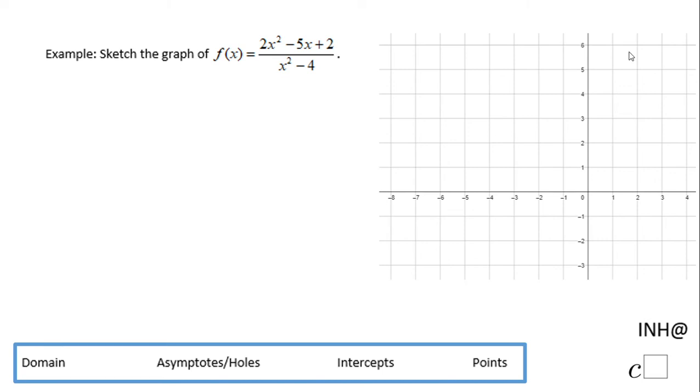Welcome over, welcome back. I need help. At C squared, in this example we need to sketch the graph of this rational function.